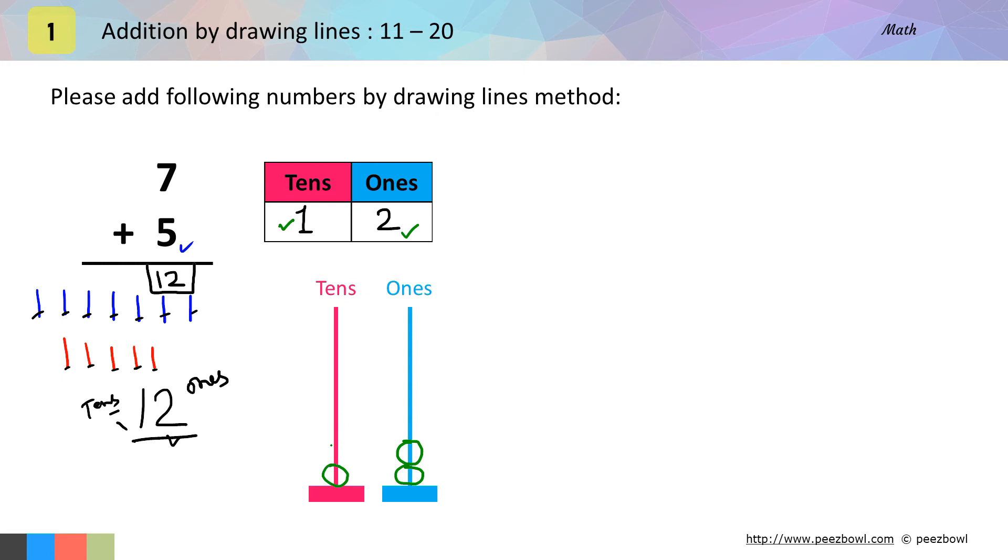Okay. I will take one more example. In this example, I have written smaller number at top and bigger number at bottom. This simply means that in addition, you can write two numbers in any order. Okay. Let us solve this. First, I will draw six lines.